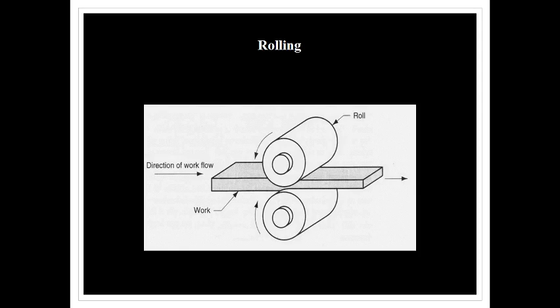In rolling operation, mainly thick metal plates will be passed under cylindrical rollers. The basic rolling operation will be figured out. The initial thickness is T1 and the final thickness is T2. It is a thickness reduction process.